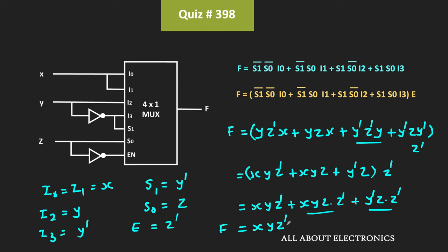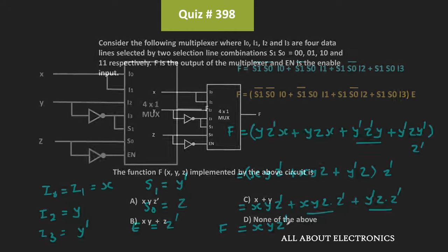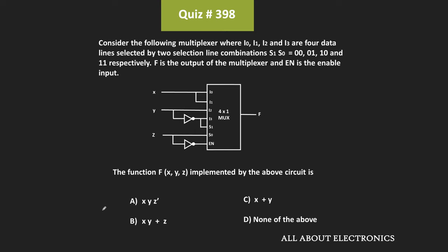The function which is implemented by this given multiplexer circuit is equal to x·y·z̄. Therefore, for the given question, this is the correct answer.